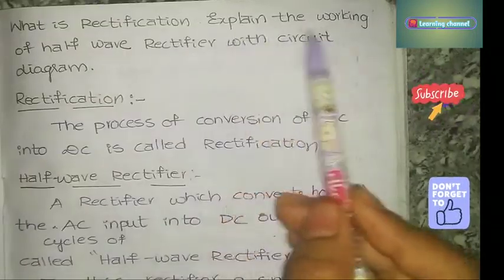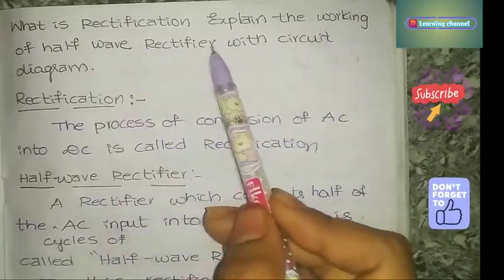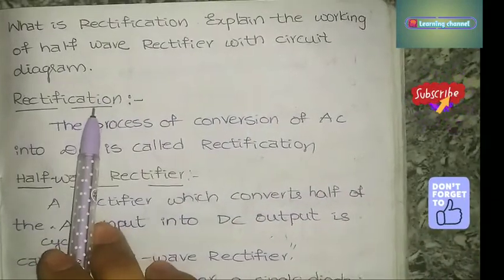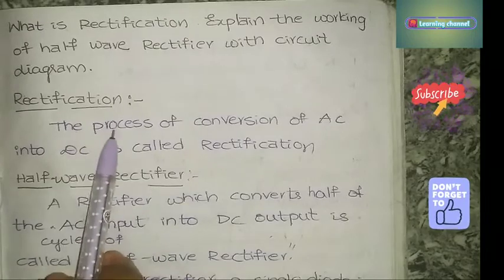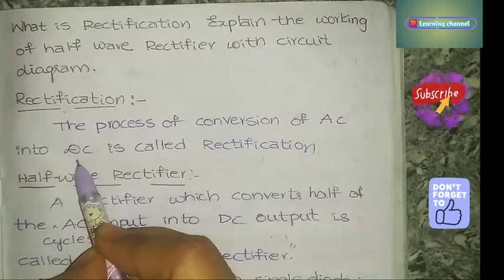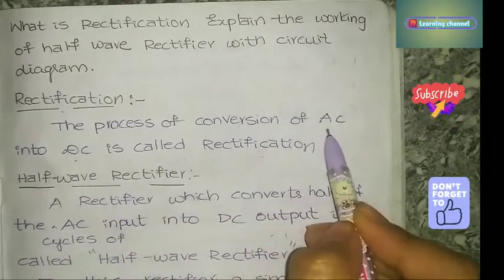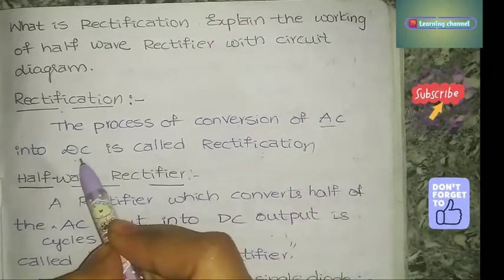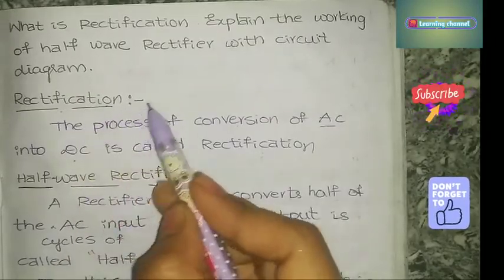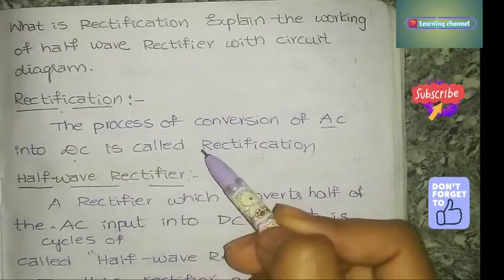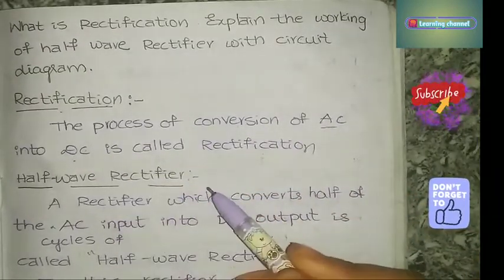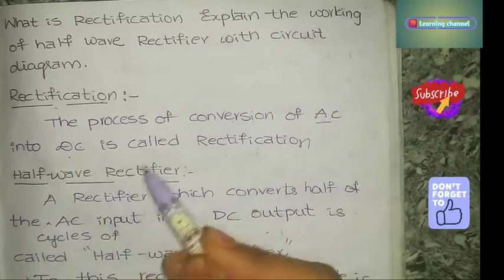What is rectification? The process of conversion of AC into DC is called rectification. The device which converts AC into DC is called a rectifier.